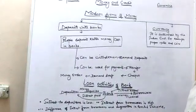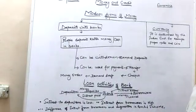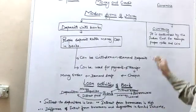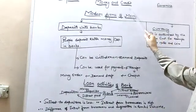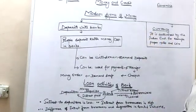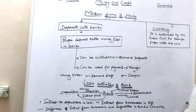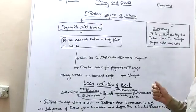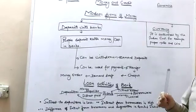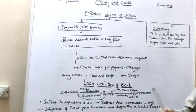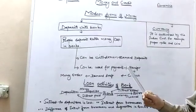Hello students. In my first lecture of the chapter Money and Credit, I taught you about the barter system and about the definition of money. In the barter system, we sell goods in place of goods.